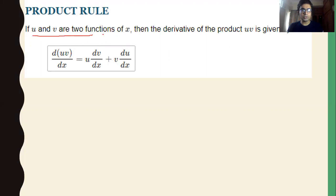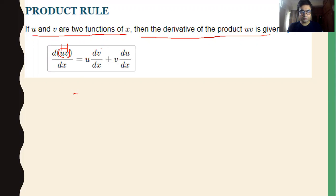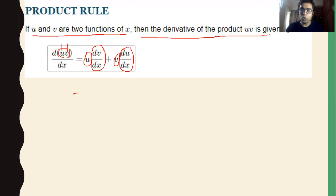Let u and v be two functions of x. The derivative of the product u·v requires us to differentiate one function and treat the other function as a constant, then multiply. Similarly, we add the differentiation of the other function multiplied by the constant. So we differentiate one function and treat the other as a constant, then differentiate the other function and treat the first as a constant. This is called the product rule.